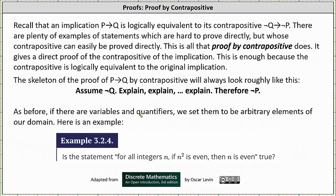As before, if there are variables and quantifiers, we set them to be arbitrary elements of our domain. Here's an example: Is the statement 'for all integers n, if n² is even, then n is even' true?